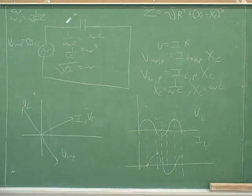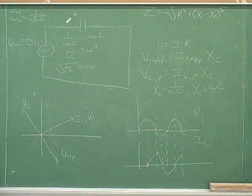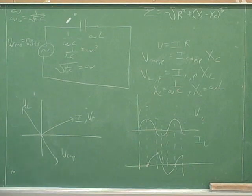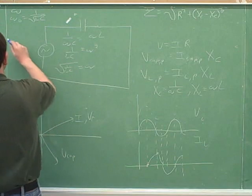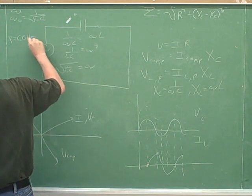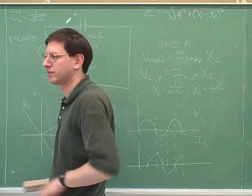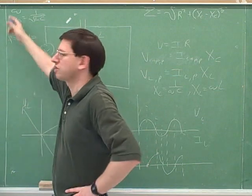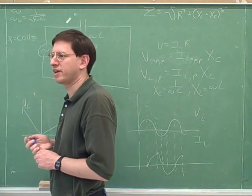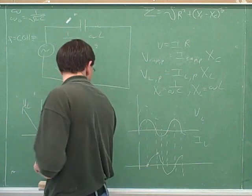Let's try a standard AC problem. We'll put this information into our picture. We have 60 hertz — I'll put that over here because it's coming from the power source. Remember that's telling us the frequency, but what's going to be useful to us is omega, the angular frequency. The equation that relates omega and f is omega equals 2 pi f.